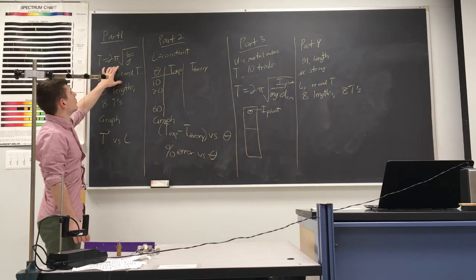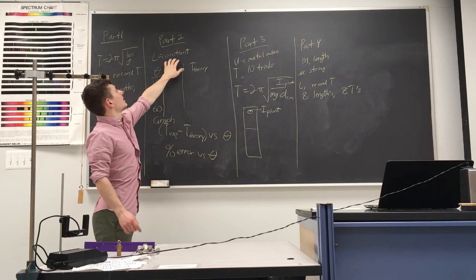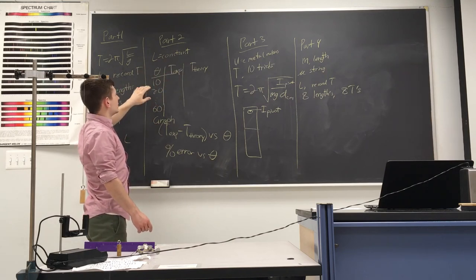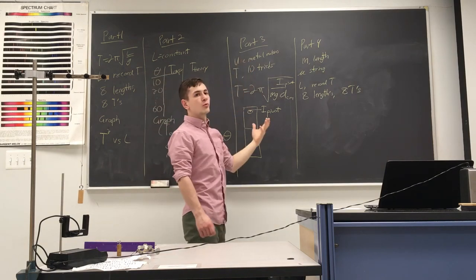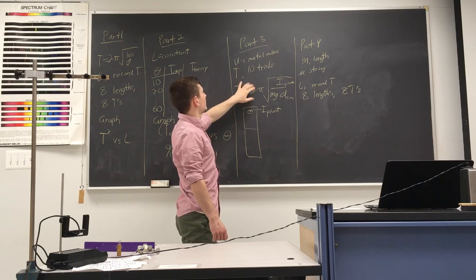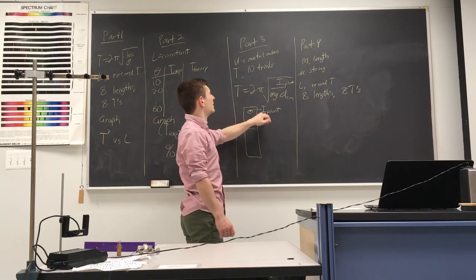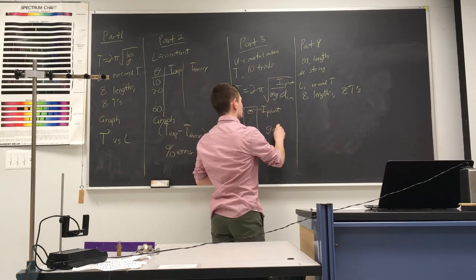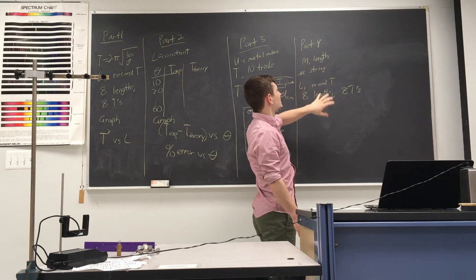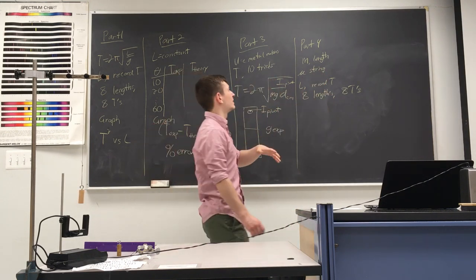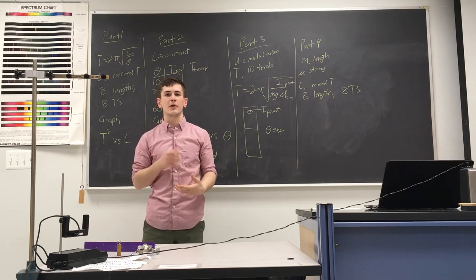To recap all parts: Part 1 uses the brass bob, recording 8 different lengths and periods, all at less than 10 degrees. Part 2 keeps the length constant with the brass bob, varying from 10 to 60 degrees and comparing experimental to theoretical period. Part 3 uses a metal ruler as a physical pendulum to experimentally find the period over 10 trials and then find an experimental value of g, which should be close to 9.81 m/s². Part 4 is like part 1 but with a wooden bob treated as a physical pendulum, recording 8 lengths and periods. Excel will help a lot with the analysis. Feel free to ask Professor Bono or your classmates if you have questions.